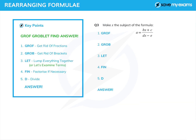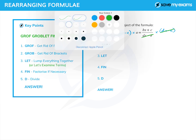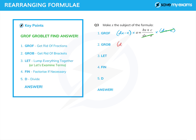Question three — this is the sort that normally strikes fear into the hearts of GCSE students. We've got a nasty algebraic fraction on the right, and a term with x on the top and the bottom. But have no fear, because Groff Groblet is here. Step one: get rid of fractions. What's on the bottom? dx minus e. So we multiply both sides by (dx minus e) — I'm going to put it in brackets because it's a nasty expression. That doesn't stop it cancelling on the right. And now we write down what we've got: (dx minus e) times a is equal to bx plus c.